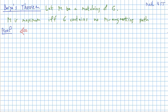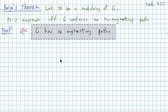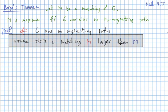So for this, let's assume that G has no augmenting paths. Let's proceed by contradiction and assume that there is a matching M prime that is larger than M.